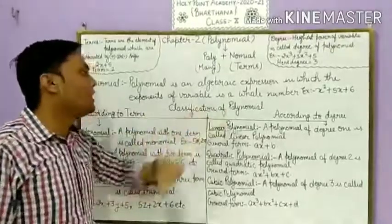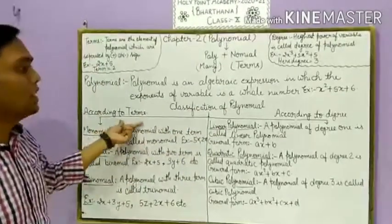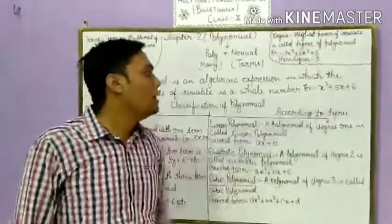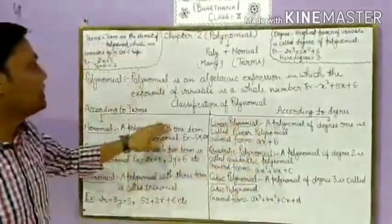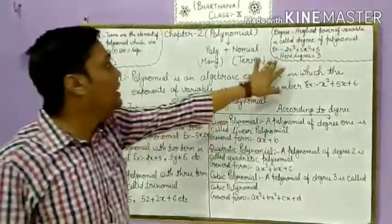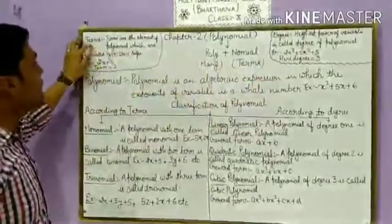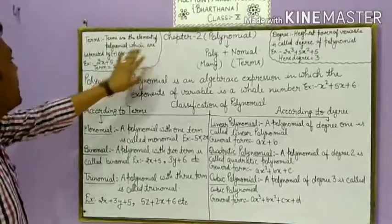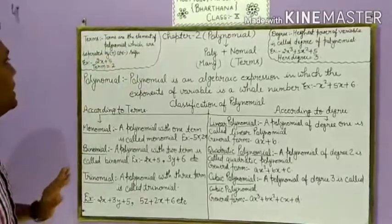Classification of polynomials is of two types: according to the terms and according to the degree. Before starting the classification, first we should know about terms and degree. Terms are the elements of a polynomial which are separated by a plus or minus sign.